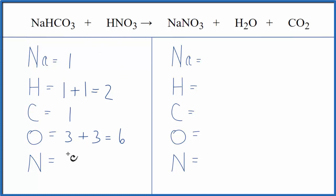And then nitrogens, we have one of those. On the product side, we have one sodium, two hydrogens, carbons we have one of those, oxygens we have three, plus we have the one, plus we have the two. So three plus one is four, plus two is six, and then one nitrogen atom.